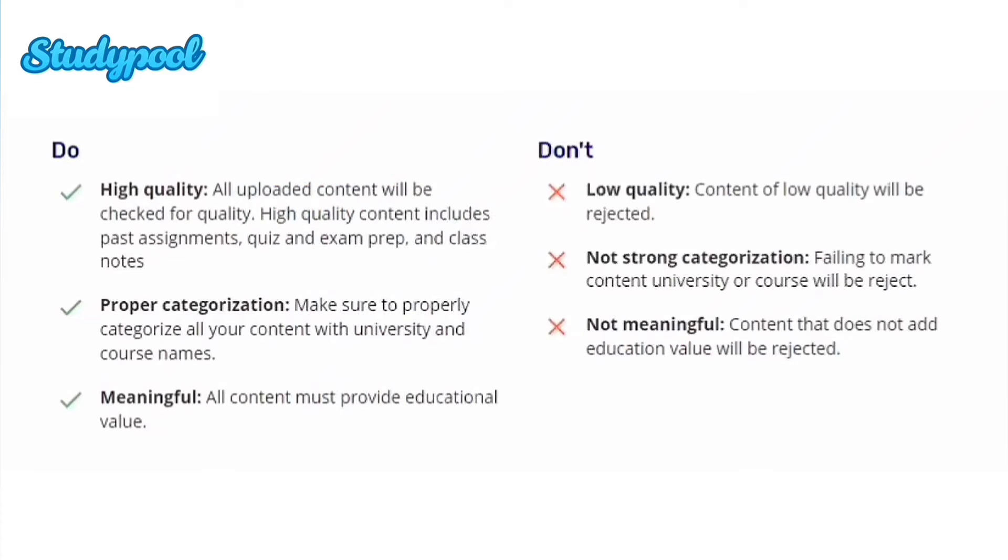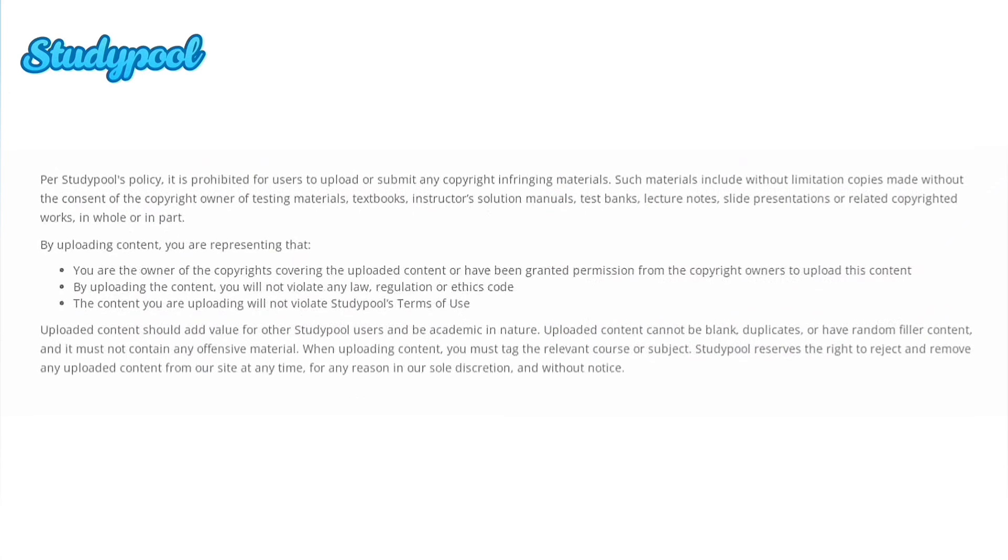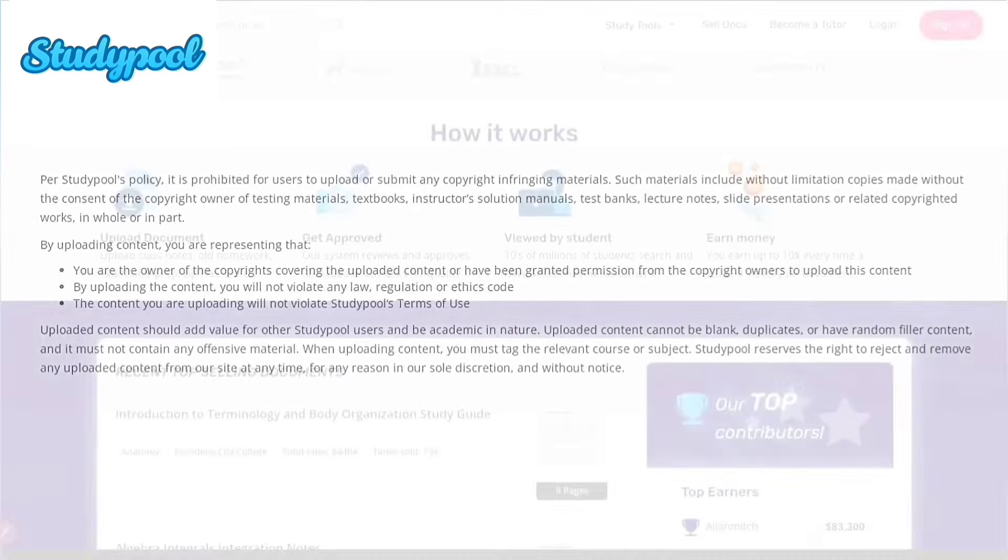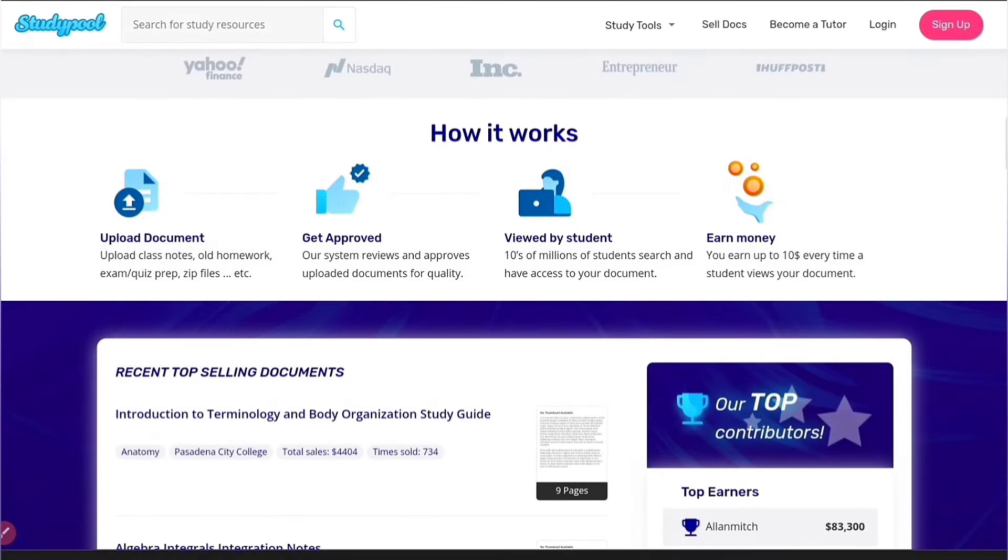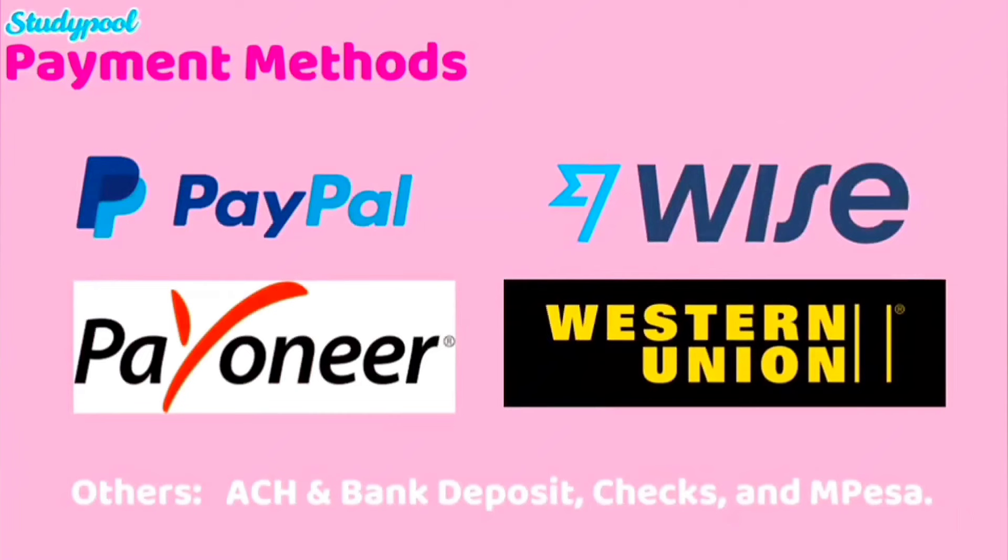When uploading documents, there are some do's and don'ts: content quality should be high, properly categorized, and meaningful. You must not upload copyrighted content without permission. Once approved by Study Pool, you earn up to ten dollars each time it's sold. Processing time is generally two to twenty-four hours.